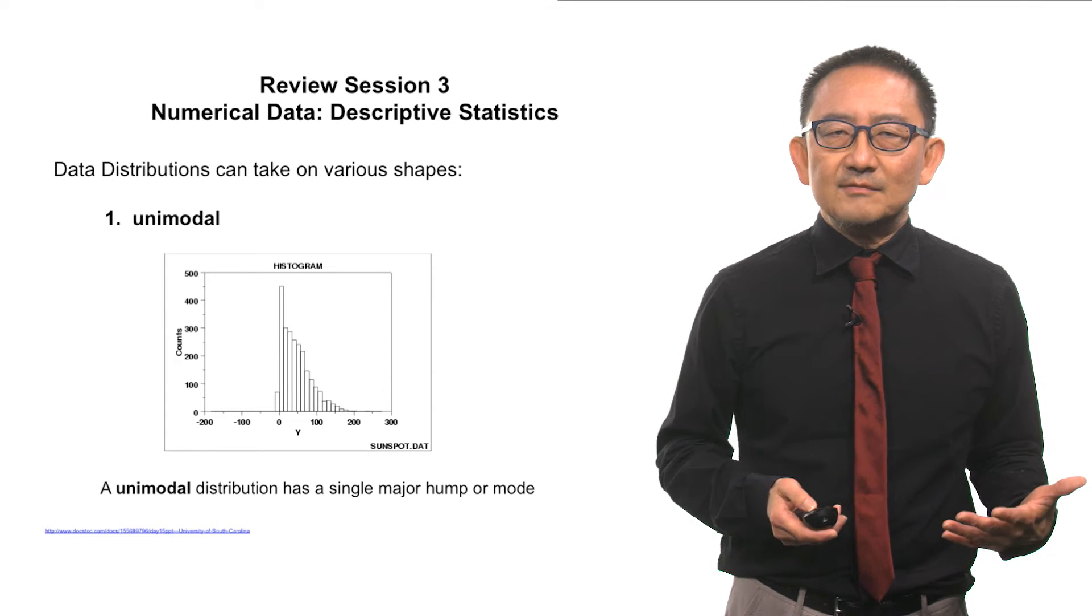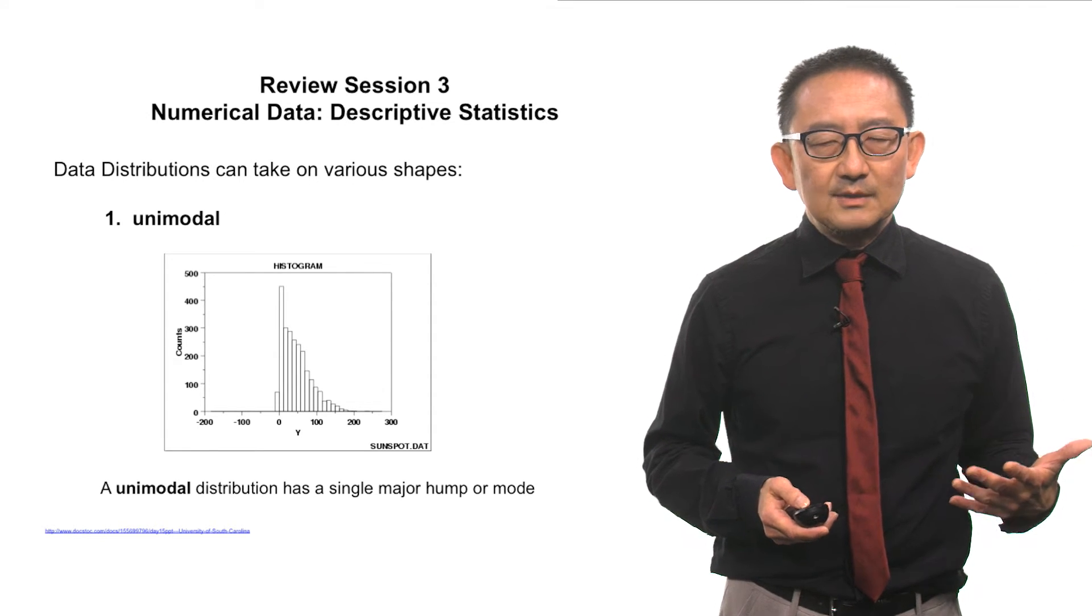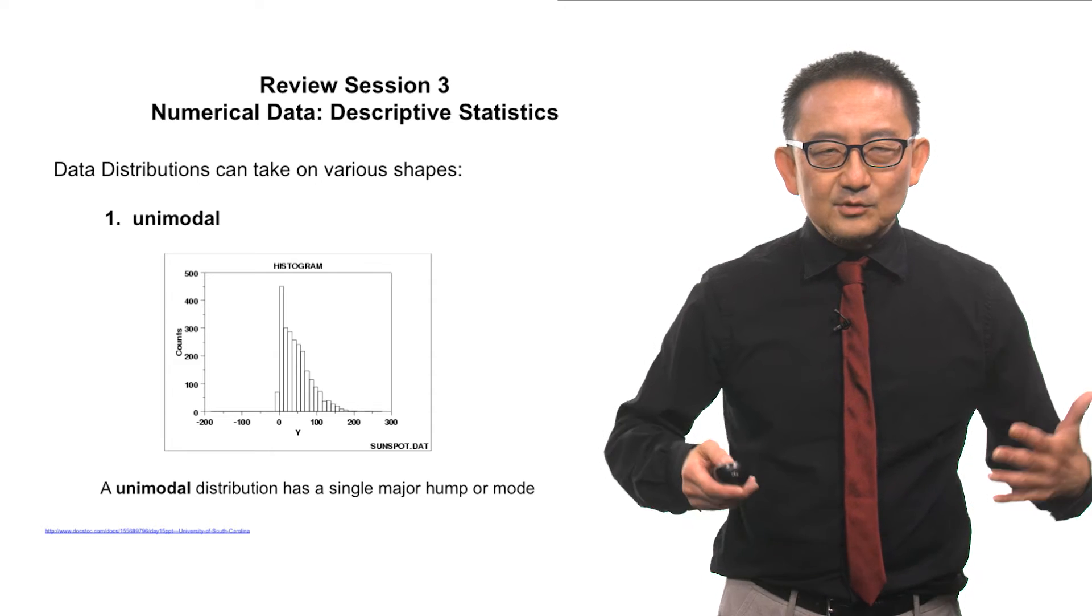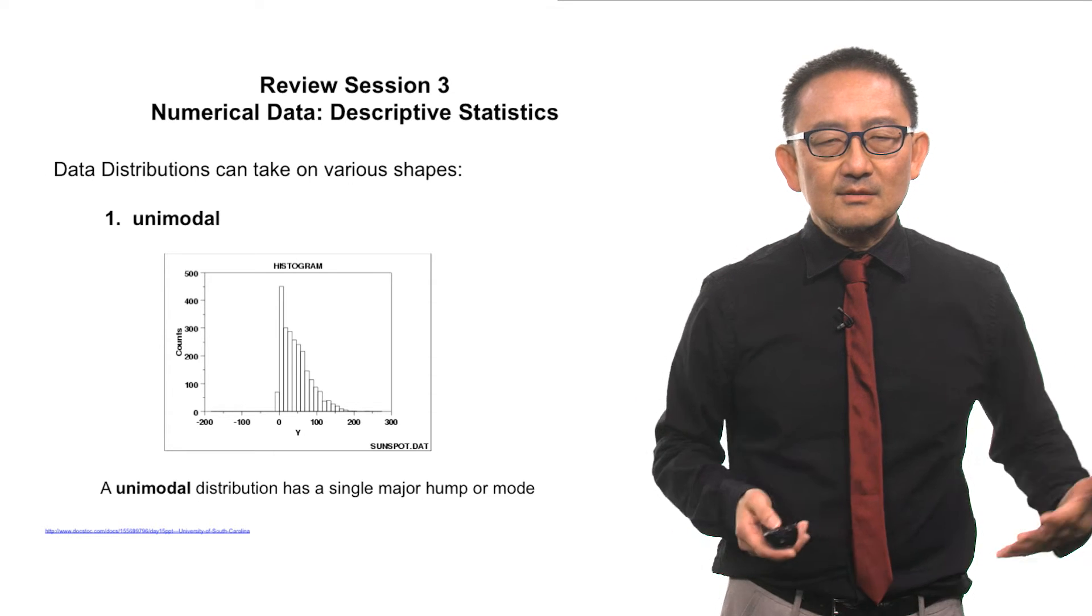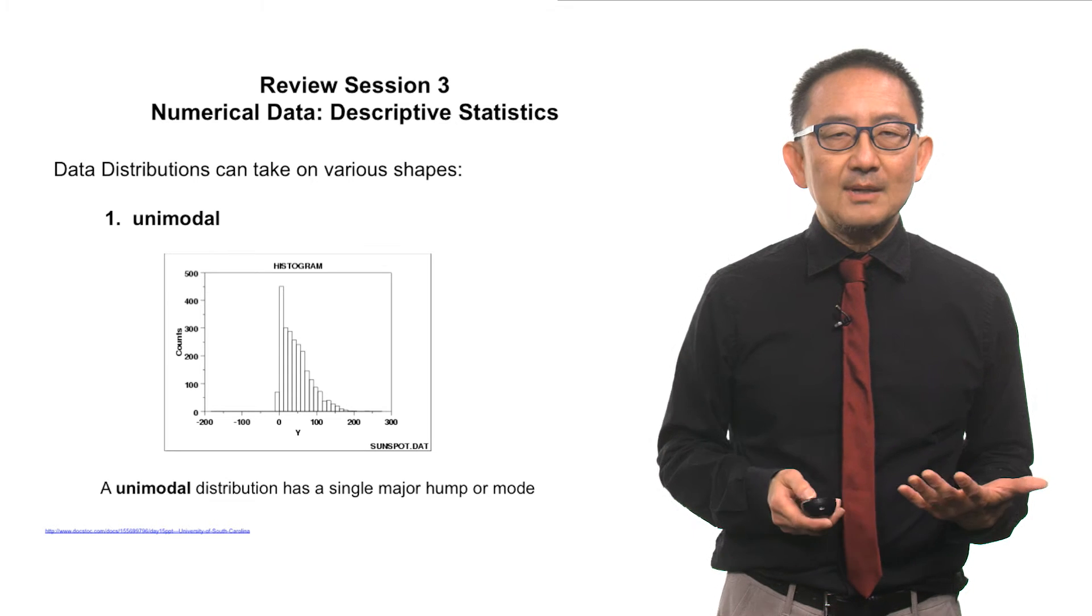Here is an example of a unimodal graph. We'll see that there's one big peak at the center, and that's very prominent.